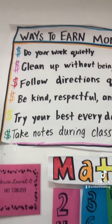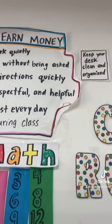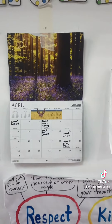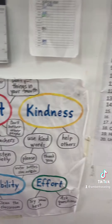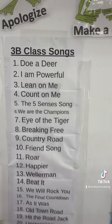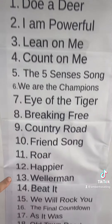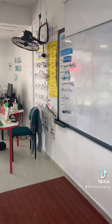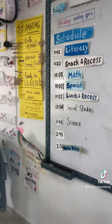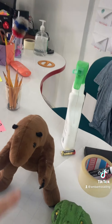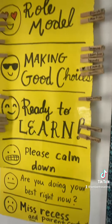Over here we have ways they can earn money — I'll show you that in a second — some math multiples, a calendar with everybody's birthday, the class rules, and a reading chart. And here we have the class songs. I chose the first five and the rest were all chosen by students. And over here we see the daily schedule and my class mascots: a giant sloth and a dinosaur.